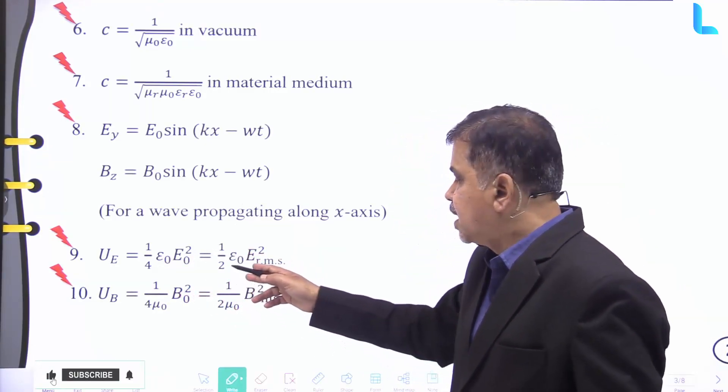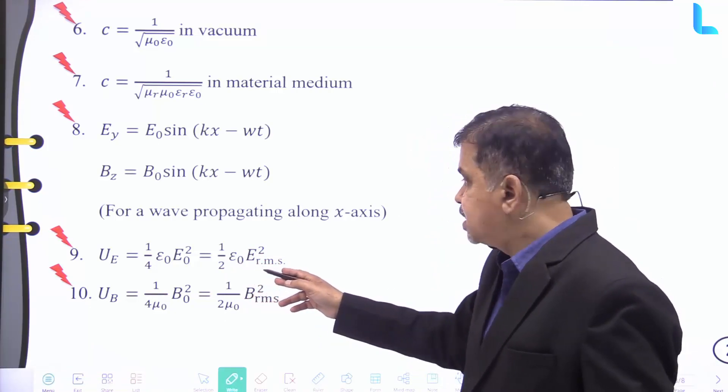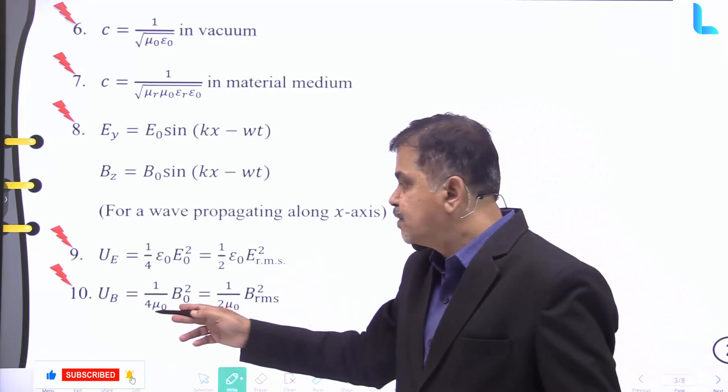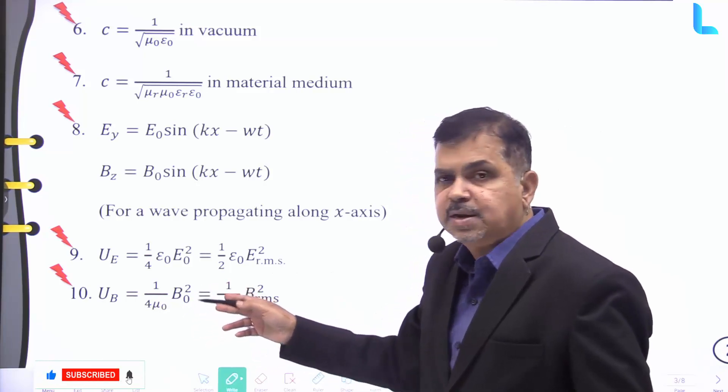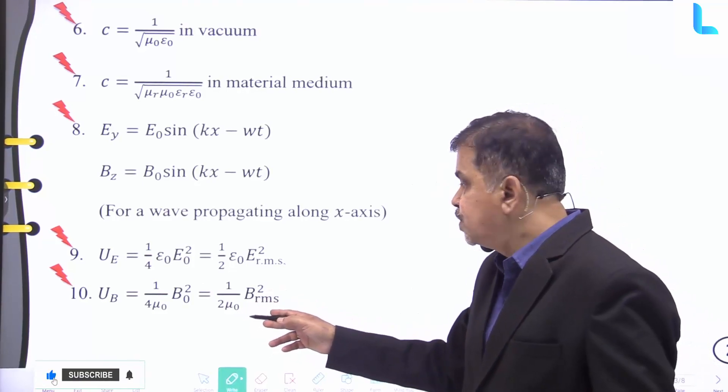UE is given by 1 by 4ε₀ into E₀ square, and that is also equal to half into ε₀ into E₀ square. And UB is given by 1 by 4μ₀ into B₀ square, and that is equal to 1 by 2 into μ₀ into Brms whole square.